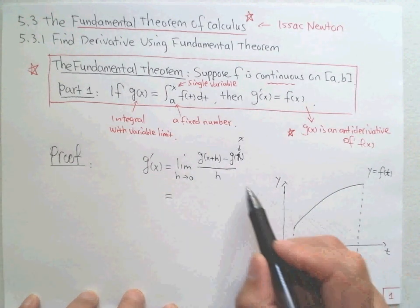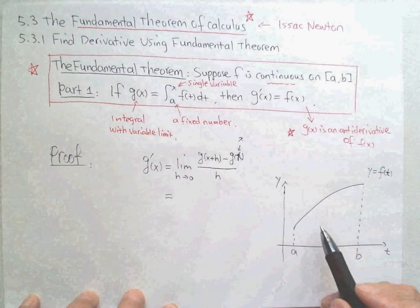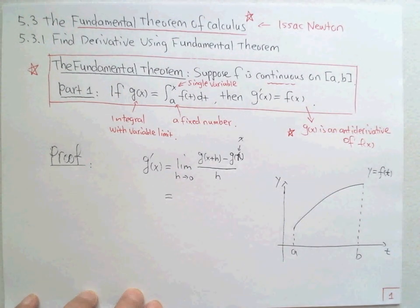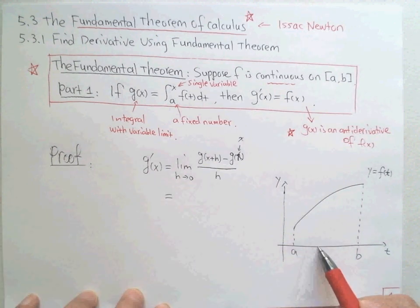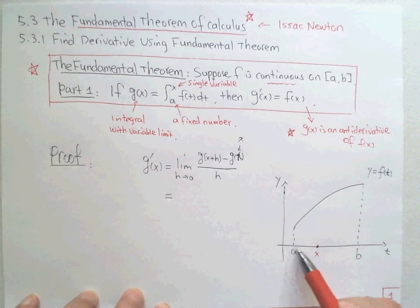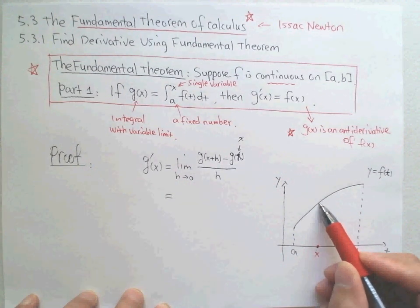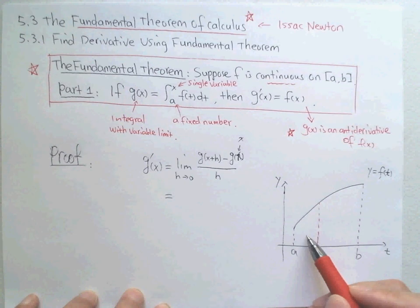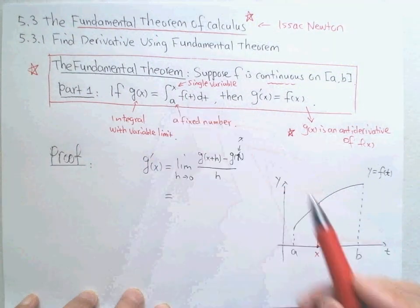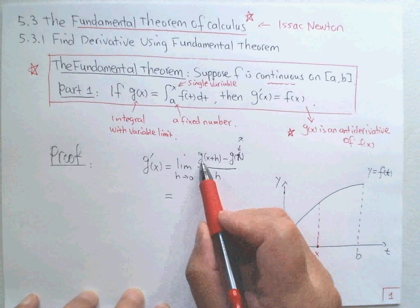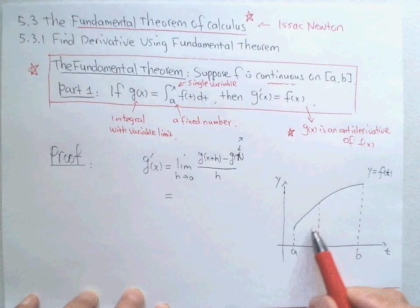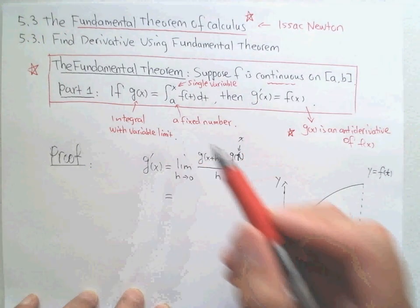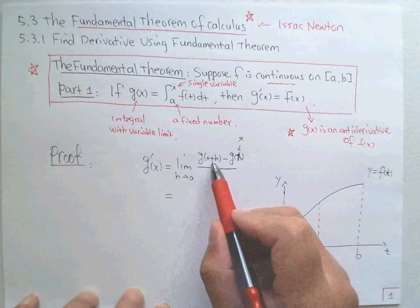What is g(x)? It's the integral from a to x. If x is some point between a and b, then g(x) is the area starting from a and stopping at x. This is the integral, the area under the curve.